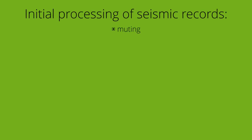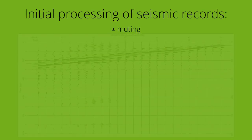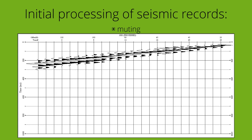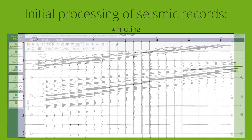At first, muting is applied. Muting removes specific seismic energy which is not related to the surface waves, and which appears at a different arrival time range.